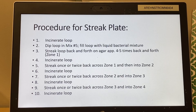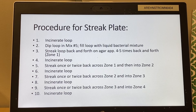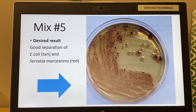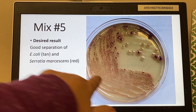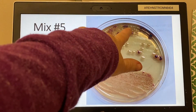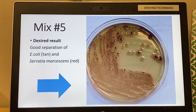It's a good idea to bring the lab five procedure with you. The key rule is: you never go back to the original streak because that's the most concentrated. You only streak from the previous streak — that's how you get your dilution. Here's an example plate from an actual student: really concentrated at first, but by the time you get to streak four you can see individual tan and red colonies.